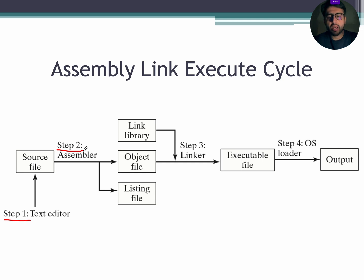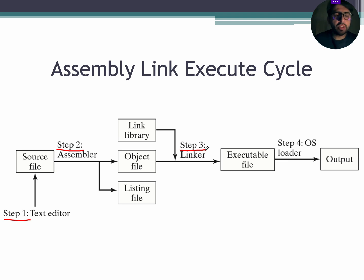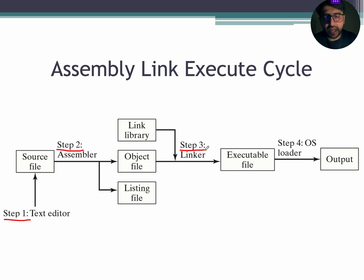In step 3, the linker reads the object file and checks to see if the program contains any calls to libraries or functions. The linker copies the required libraries or functions from the link library, combines them with the object file, and produces an executable file. The extension of an executable file is .com.